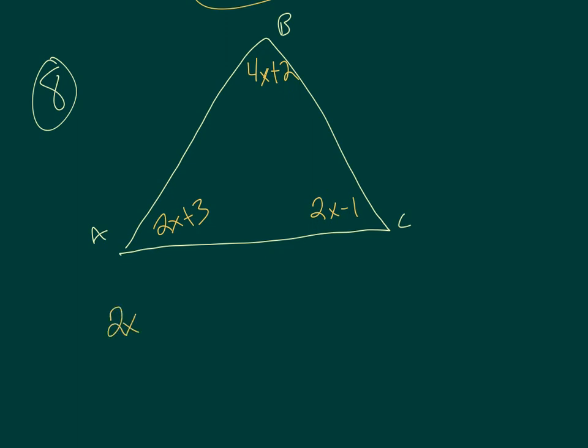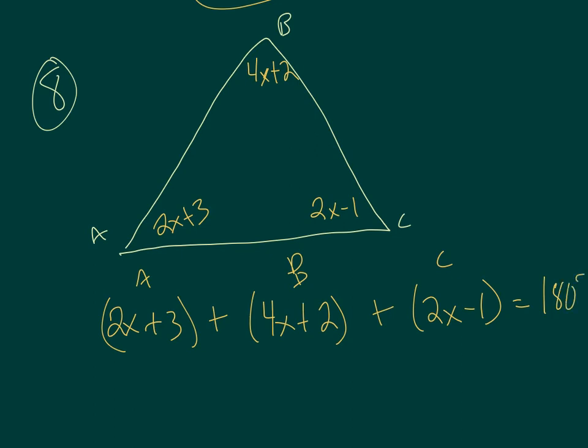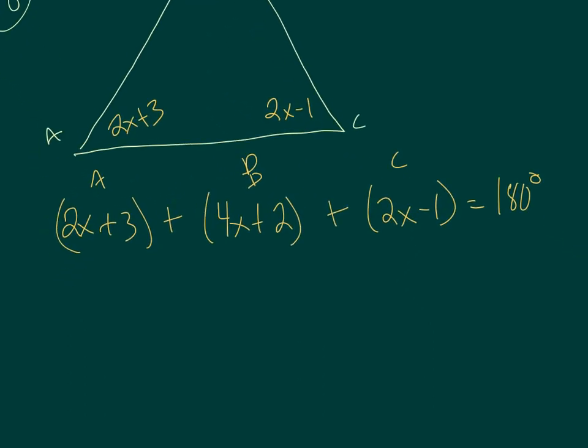2x plus 3, that takes care of angle A, plus 4x plus 2, that takes care of angle B, plus 2x minus 1, that takes care of angle C. All of that has to be equal to 180. Let's do some combining of like terms. I'm going to put all of my x's into the same basket or the same train car. They all get to go in that white train car. So I have 2x's plus 4x's plus 2x's, which just gets me 8x's. And then I'm going to put my regular numbers in the same train car. And I've got 3 plus 2 is 5 minus 1 is 4, so positive 4. And all that has to be equal to 180 degrees.